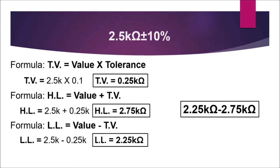This range indicates whether the resistor can still be used or needs to be replaced. If the measurement is outside this range, the resistor is out of tolerance and needs to be replaced. But if the measurement is between 2.25 kilo-ohms and 2.75 kilo-ohms, the resistor is still good.